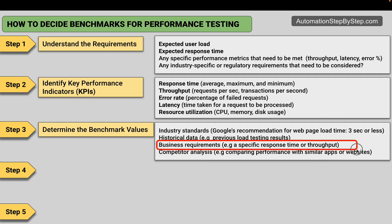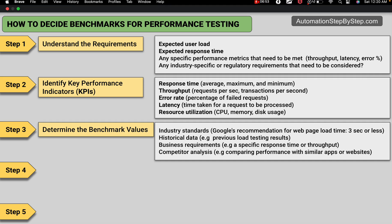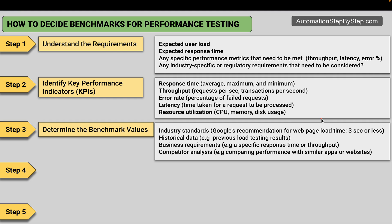We can also talk to the stakeholders and business team to get their expectations for response time or throughput, and create benchmark values from that. We can also compare similar applications or websites, analyze their performance, and use that as a reference. This is a very important step where we actually determine and decide the values for our benchmark for our performance test.